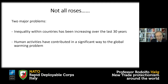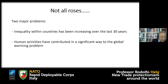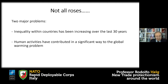We economists have underplayed the role of inequality. The other major problem is that human activities have contributed in a significant way to the global warming problem. Because the last hundred years has been a fantastic success from an economic point of view, the capitalist engine needs a lot of resources and creates a lot of pollution. We have underplayed this problem in the past, and now we have to tackle it.